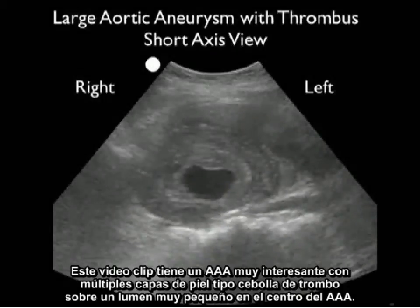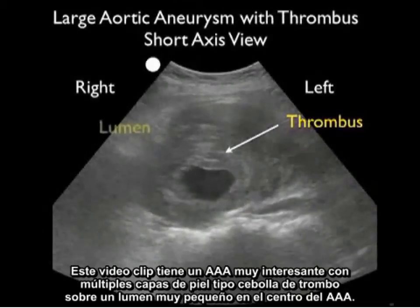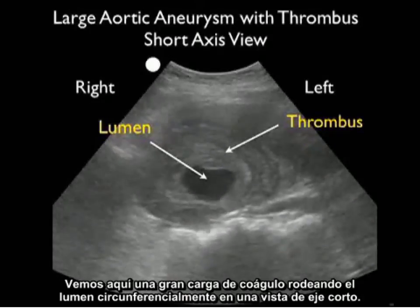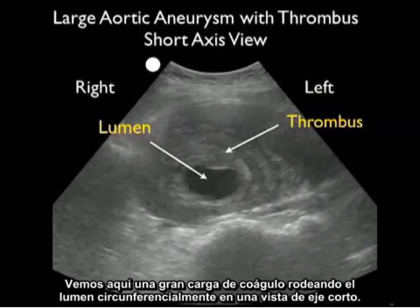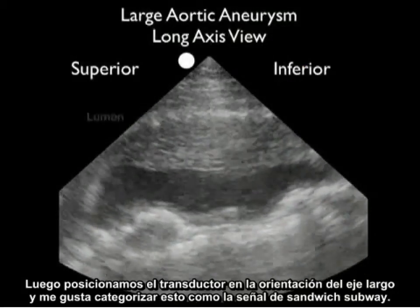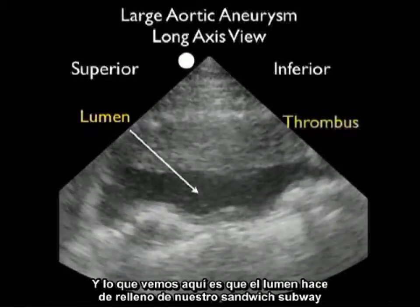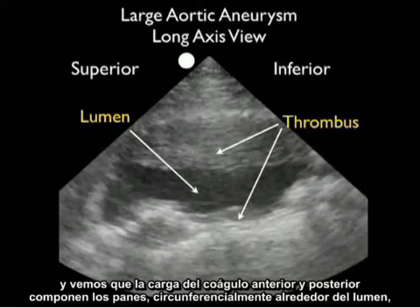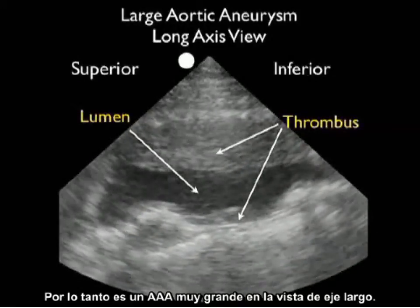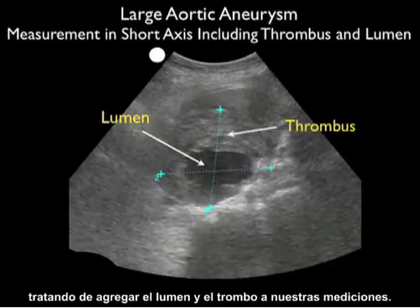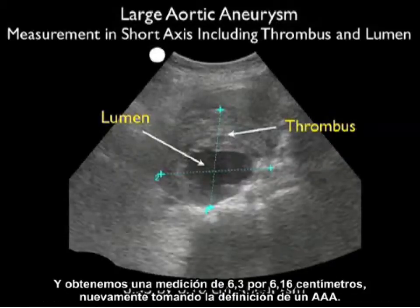This video clip shows an AAA with multiple onion skin layers of thrombus surrounding a very small lumen. Measuring only the lumen would vastly underestimate the true dimensions. In long axis orientation, I categorize this as the subway sandwich sign — the lumen forms the filling, and the anterior and posterior burden of clot forms the loaves of bread surrounding it circumferentially. Measuring with calipers from anterior, posterior, and laterally including lumen and thrombus gives 6.3 by 6.16 centimeters.